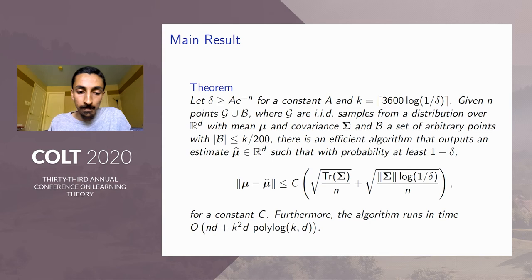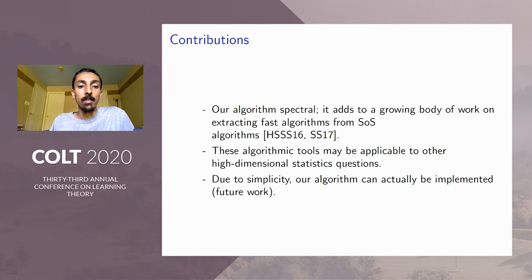So what are the main takeaways of this work? One is that our algorithm is spectral in the sense that it only requires computation of the top eigenvector of a certain matrix. So this sort of adds to a growing body of work on extracting fast algorithms, in particular fast spectral algorithms, from sum of squares-based algorithms.